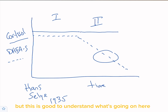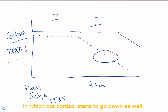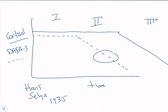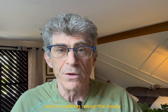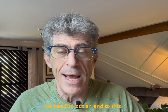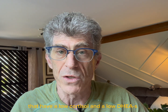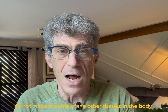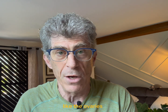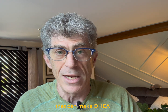Finally, there is a stage in which cortisol starts to go down as well — stage three. What we find is that the brain essentially says: we're melting away the body, we need to put an end to this. That's when we see people with both low cortisol and low DHEAS. DHEAS is particularly useful to look at because it's specifically associated with the adrenal glands — it's not made in other tissues like the ovaries and testes, which can make DHEA.